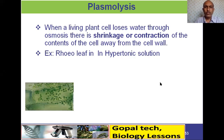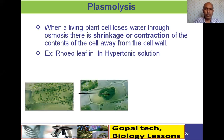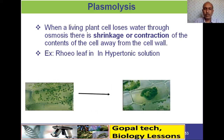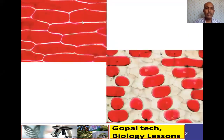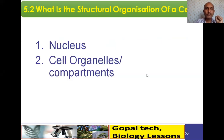When you keep the leaf in a hypertonic solution, all the cytoplasm content along with the plasma membrane shrinks and comes to one particular place — this is plasmolysis. You can see the pink or red colored content shrink. The cell size remains the same, but all the cytoplasm shrinks inward. This is called plasmolysis.